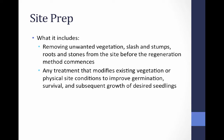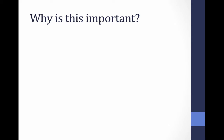So what does site prep include? It includes removing unwanted vegetation as well as slash, stumps, roots, and stones — basically removing anything you don't want at your site before you begin implementing regeneration methods. It also includes any treatment that modifies existing vegetation or physical site conditions to improve germination, survival, and subsequent growth of desired seedlings. The big overarching objective: the goal of site prep is to get regeneration established and growing.